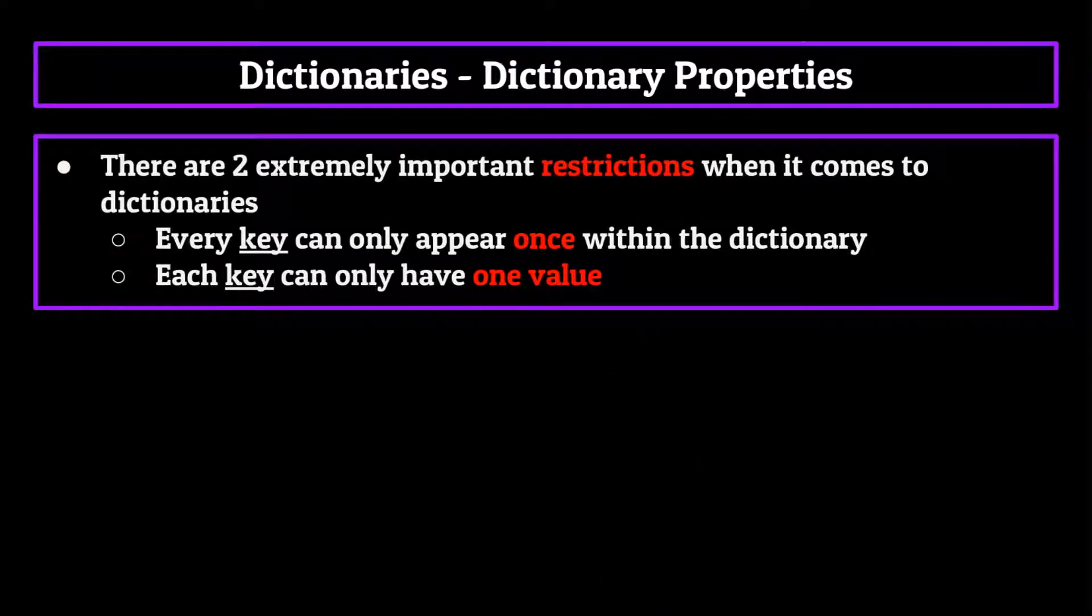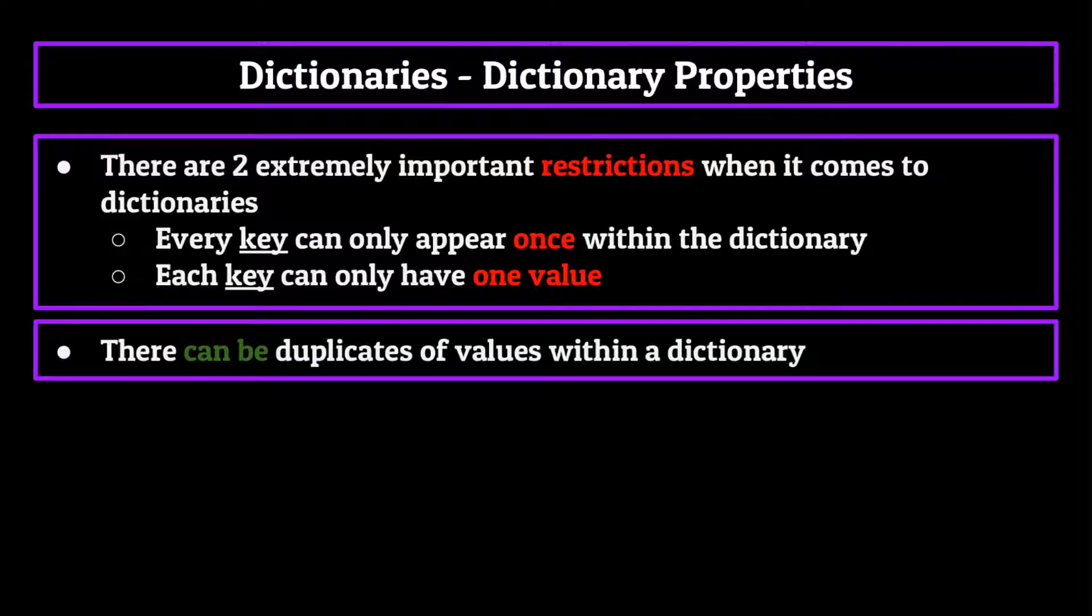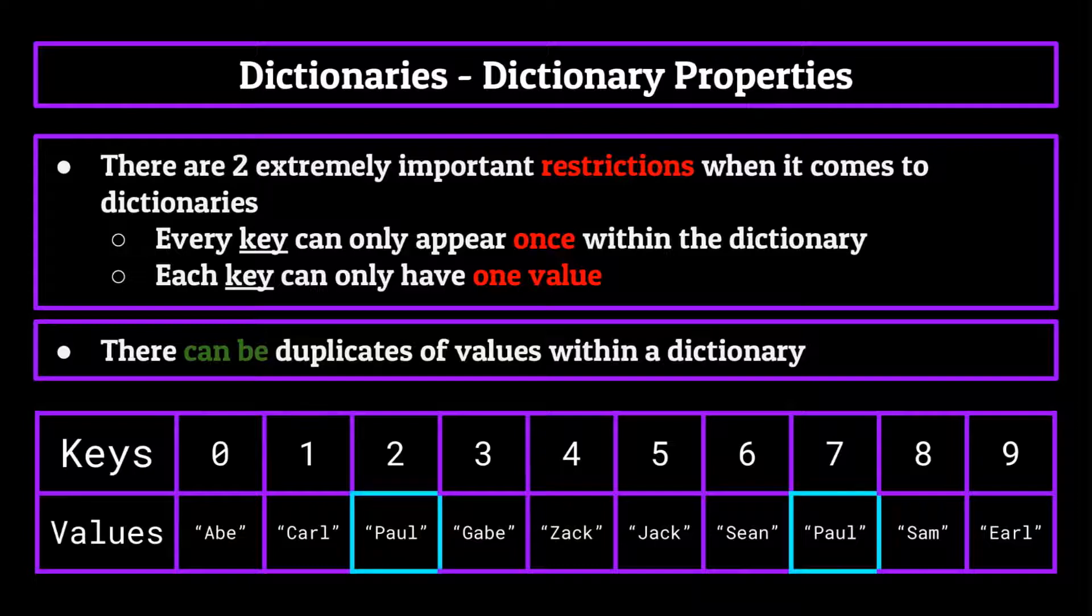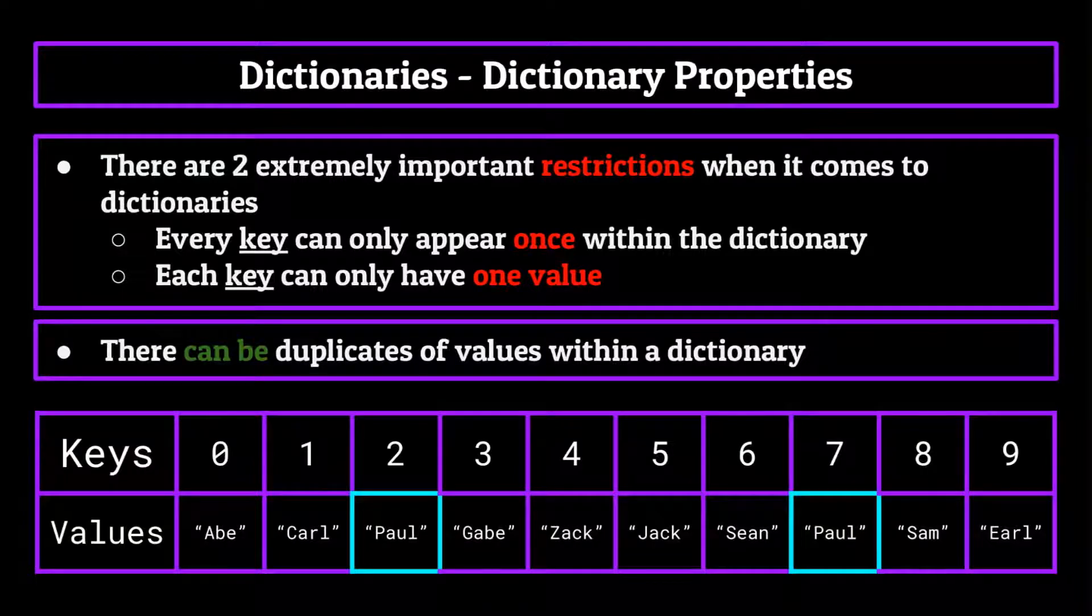Now, just as a little aside, one rule that we don't have to follow is that there can be duplicates of values within a dictionary, meaning we can have two separate keys both point towards equivalent values, as long as the keys are different, the computer doesn't care.